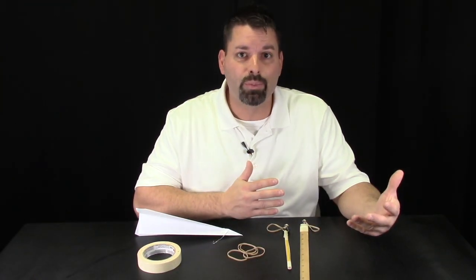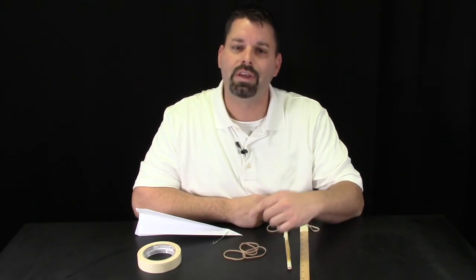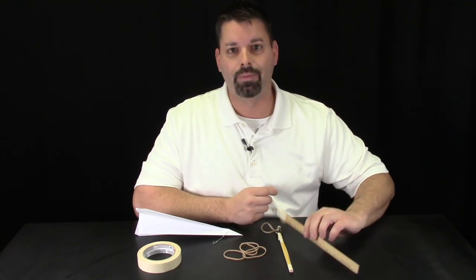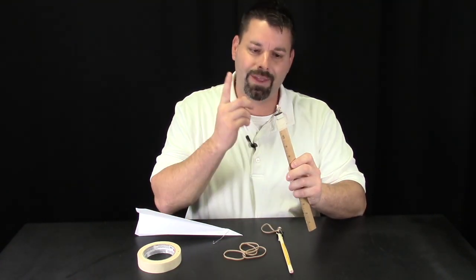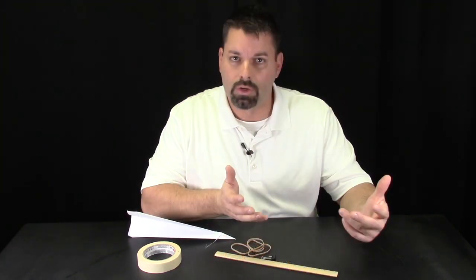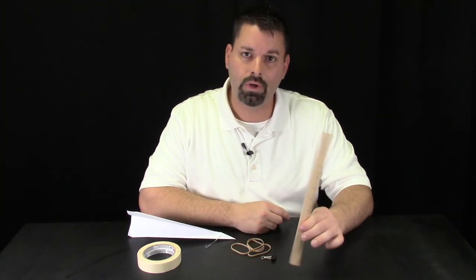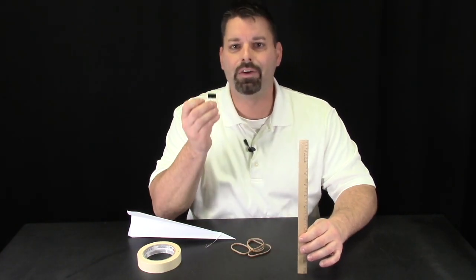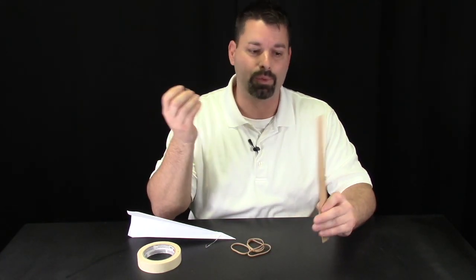Our launchers are pretty simple. We're going to be using rubber bands as the energy source for our launcher. Then you're going to need something that's going to act as the handle, and something else that's going to allow me to attach the rubber band to the handle. So to make this launcher, we're going to use a ruler for the handle. We're going to use a binder clip to attach the rubber band, and it's pretty simple.